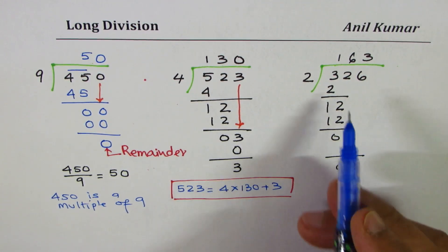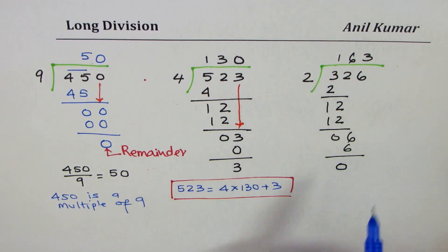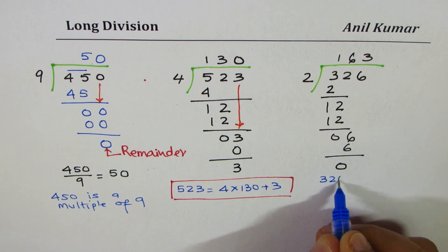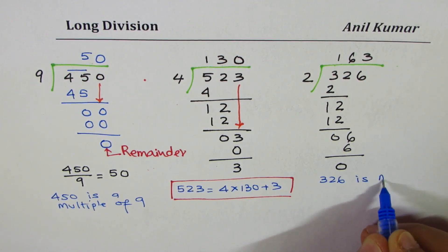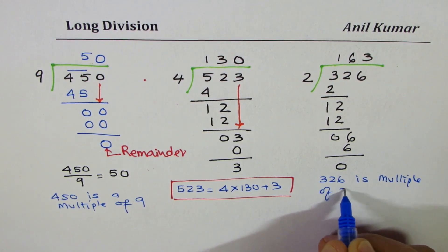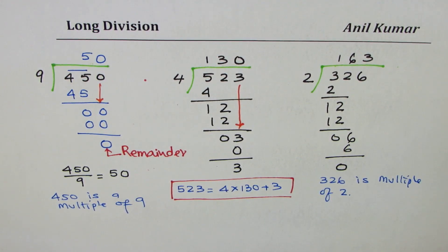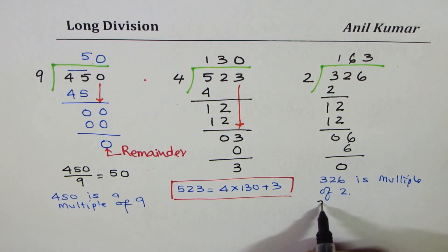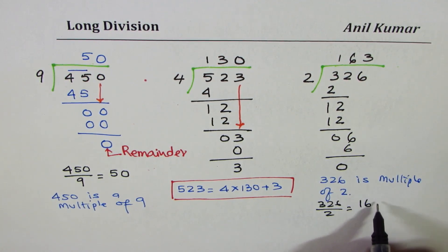So we say that 326 is a multiple of 2. We get 326 is a multiple of 2. And you could write this as 326 divided by 2 is indeed equal to 163, the quotient.